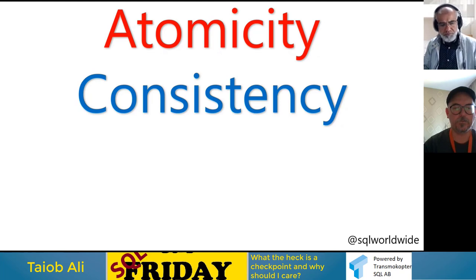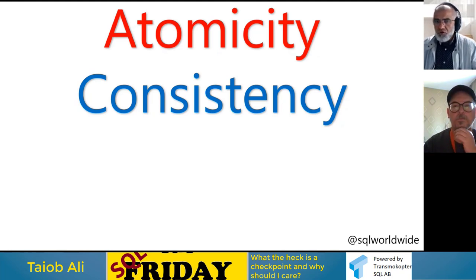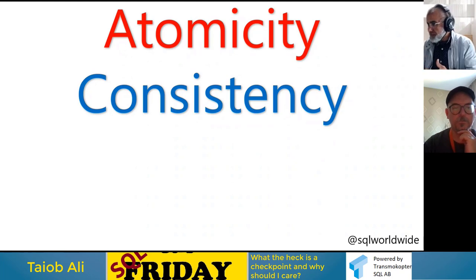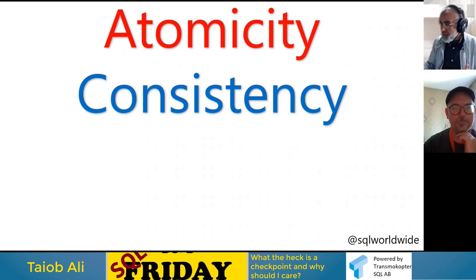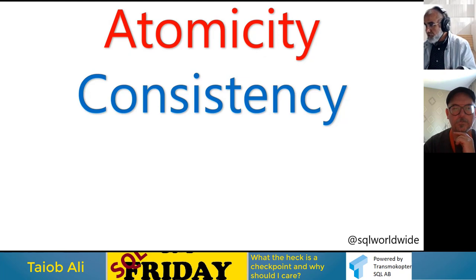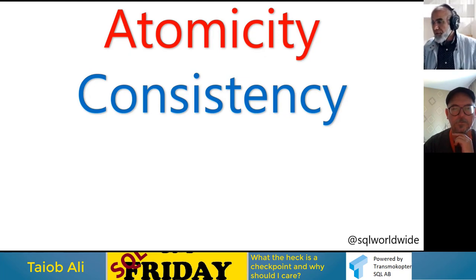Isolation is about not looking at others' work in progress. If I'm working with some data and haven't told you I'm done, you shouldn't use my data. However, there are isolation levels — for example, read uncommitted in SQL Server behaves differently. I recommend understanding isolation levels by writing code, changing your isolation level, and observing how behavior changes. It can hugely impact throughput and transactions.